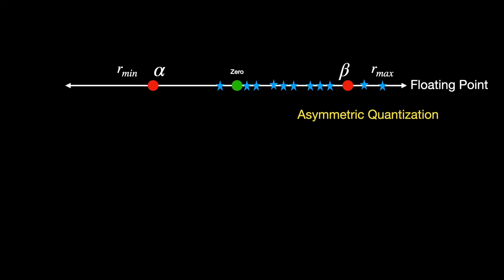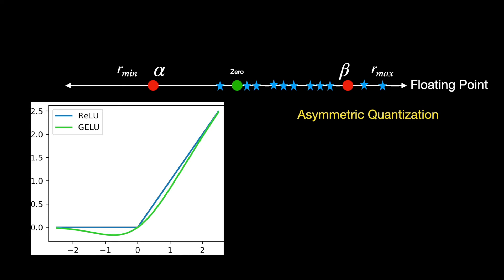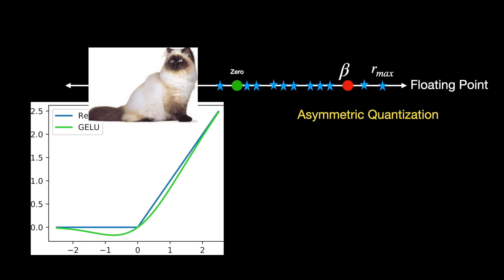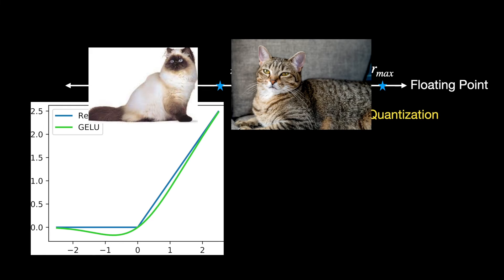Now, let's take the example where the inputs are skewed to one direction, say to the positive side. This resembles the output of some of the most successful activation functions like ReLU or GELU. On top of that, outputs of activations change with the input. For example, the output of activation function for this image is quite different to that of this image of a cat.